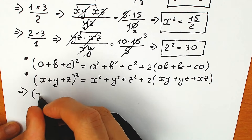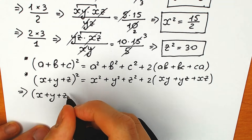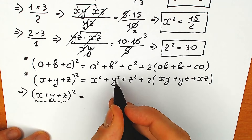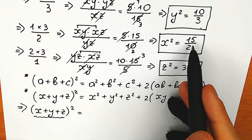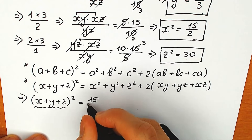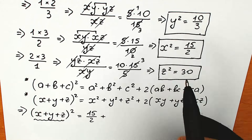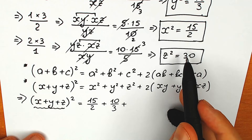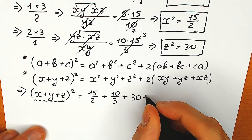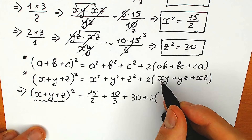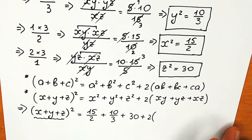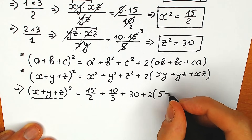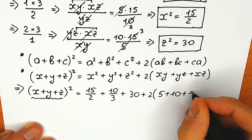So we have (x plus y plus z) squared equal to x squared plus y squared plus z squared plus 2 times (xy plus yz plus xz). That gives us 15/2 plus 10/3 plus 30, plus 2 times (5 plus 10 plus 15). So that's 2 times 30 equals 60, and 60 plus 30 equals 90, giving plus 90.